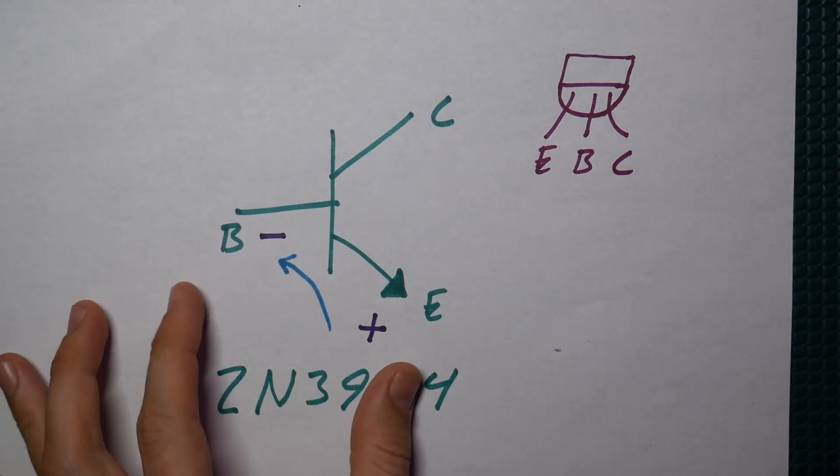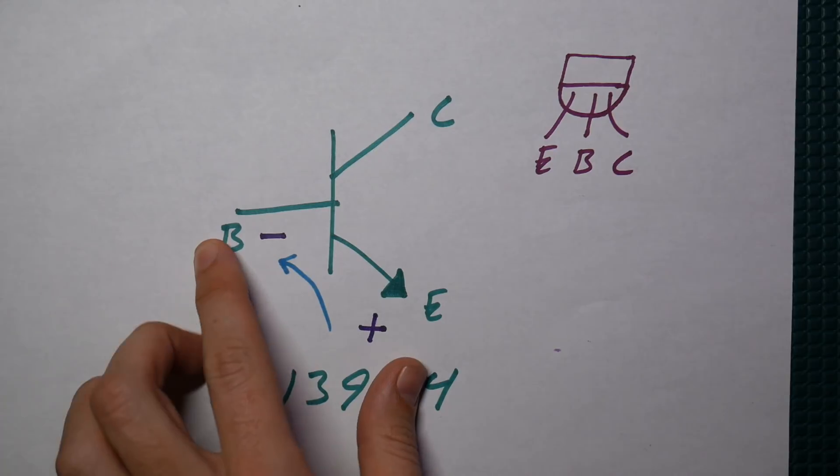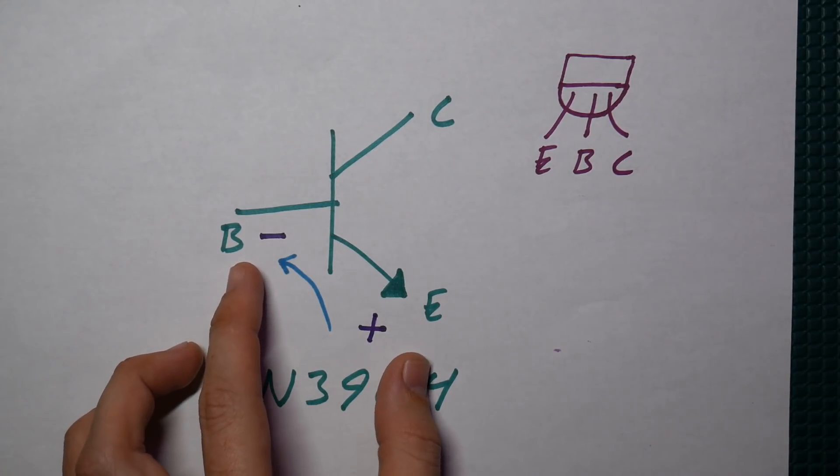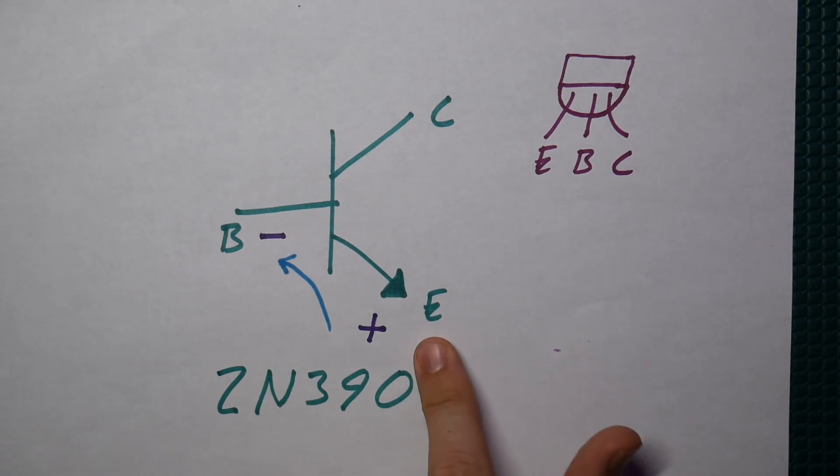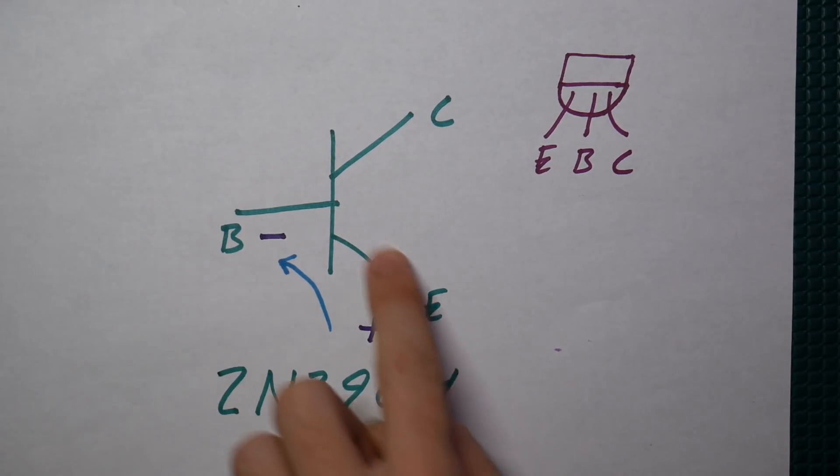And looking at the symbol here, what we're actually doing is applying a voltage across the emitter to base. So we're actually reverse biasing the emitter base junction there.